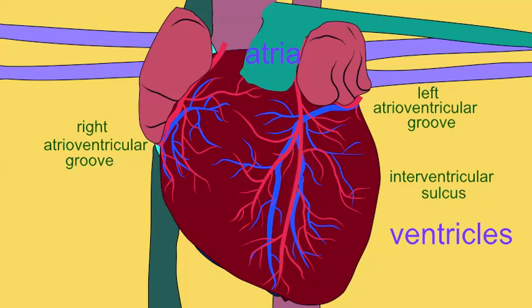The atria possess enlarged flaps known as auricles, which provide a bit more space and are visible from the exterior of the heart.